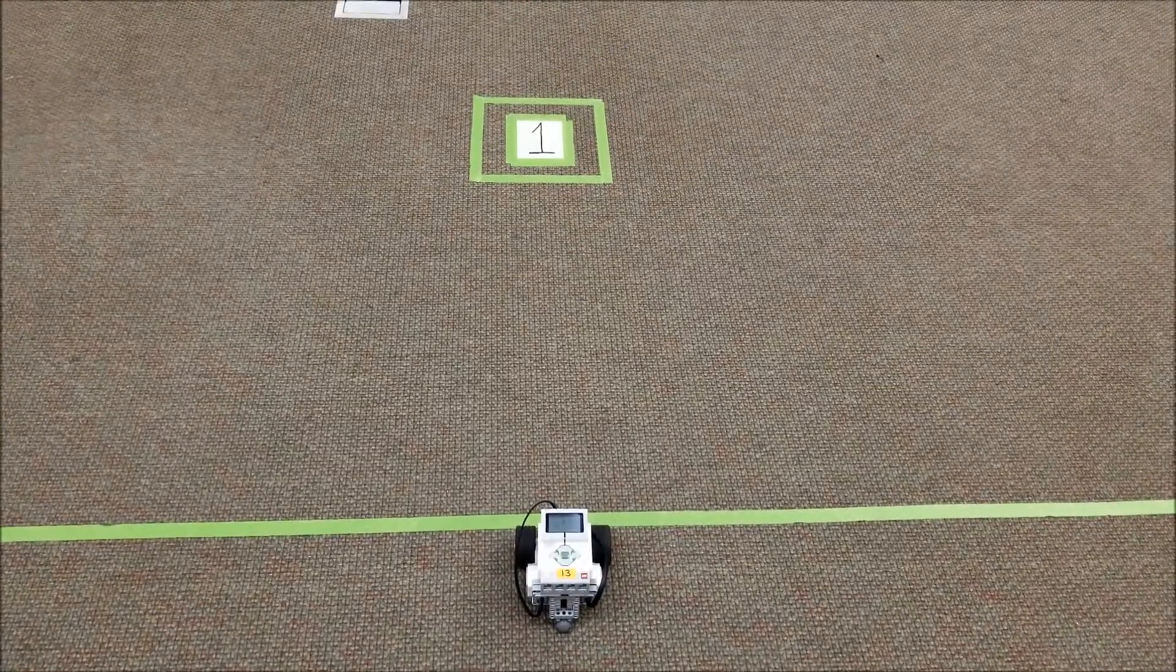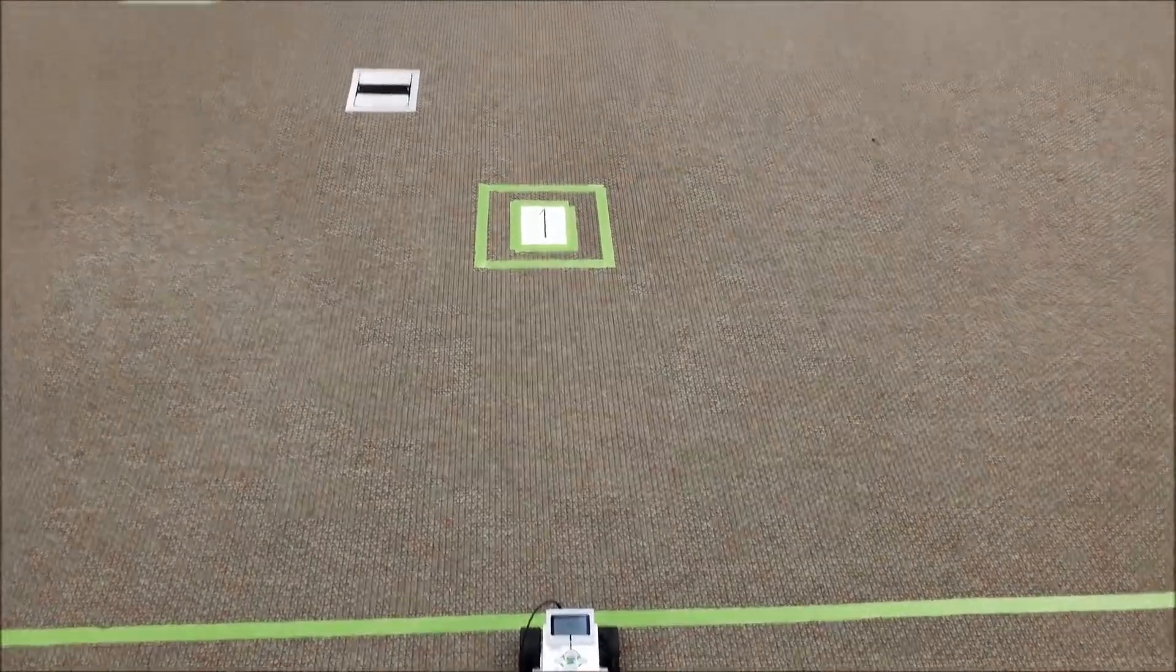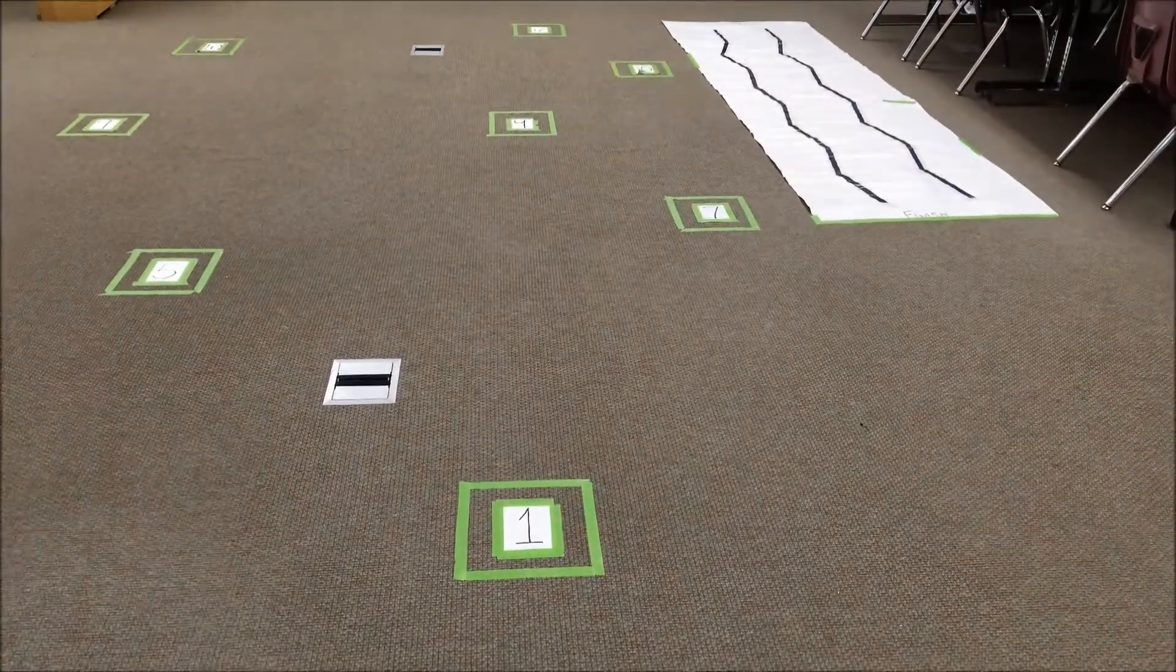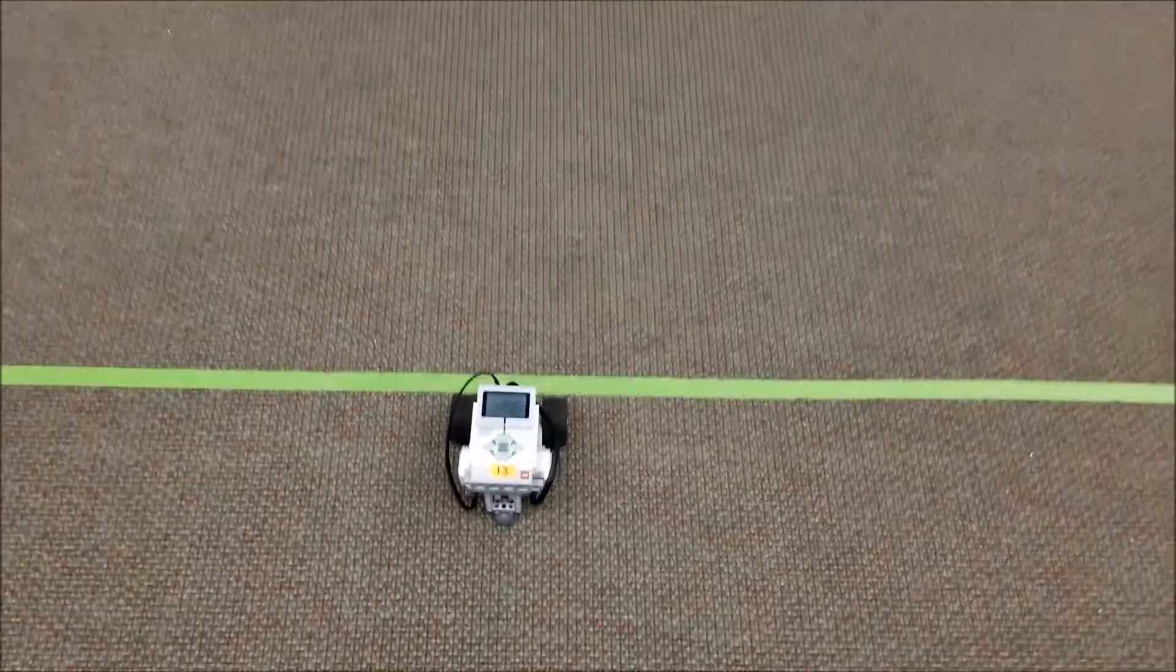Okay, so I have my robot in the same position. Notice it's lined up again for the one, the nine, should go straight. Let's find out what happens this time.